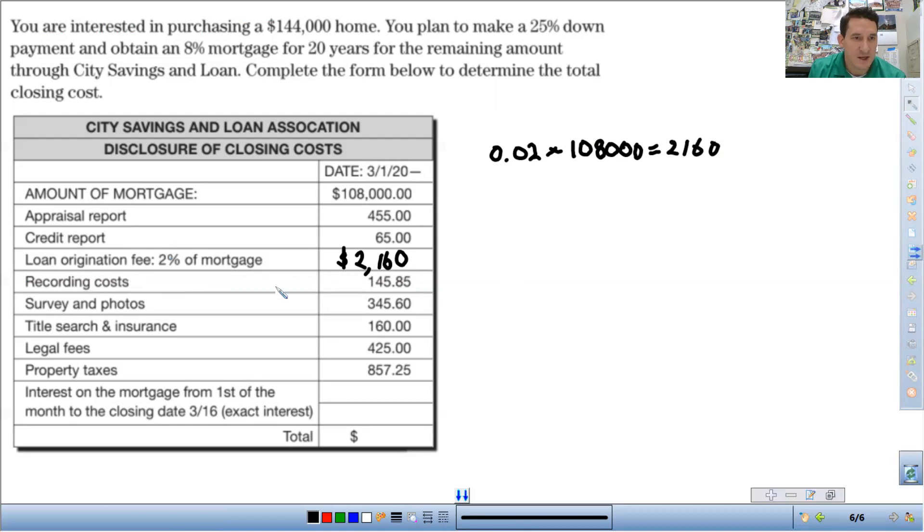Recording costs, surveying photos. So the recording costs, that's just, they're charging you for doing all the paperwork. Survey and photos. I'm not actually entirely sure what survey and photos would be. But the title search and insurance, so that's pretty self-explanatory. You got to pay for insurance, like real estate insurance and property insurance. Legal fees, so because it is, like they said, there are lawyers, there are legal fees that you have to pay. You don't need a lawyer to buy or sell a house. You do want a real estate agent, though. Those are different, but lenders will have some legal fees.